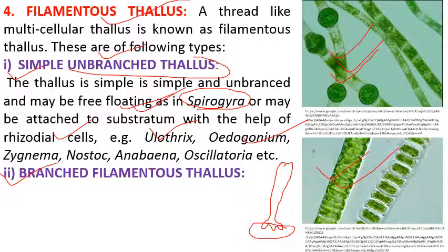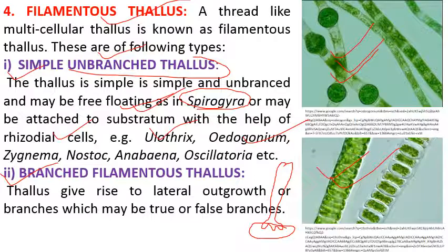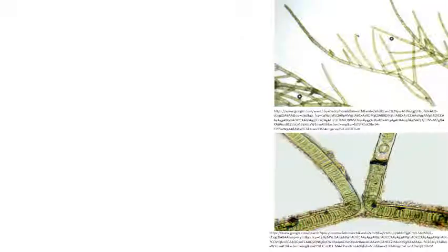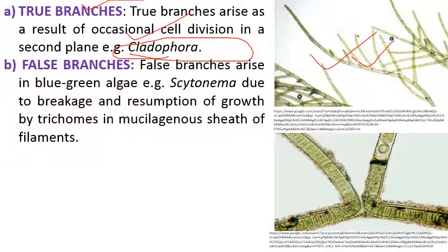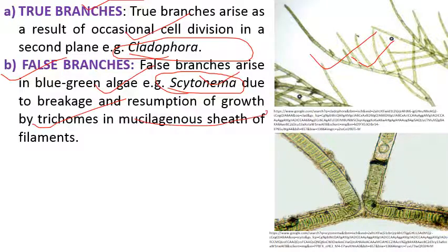Next we have branched filamentous forms, where branchings can be of two types: true branching and false branching. True branches arise as a result of occasional cell division — example is Cladophora, a green algae. False branching is present in blue-green algae like Scytonema — false branches arise due to breakage and resumption of growth by trichomes within a mucilaginous sheath.